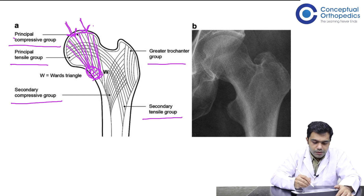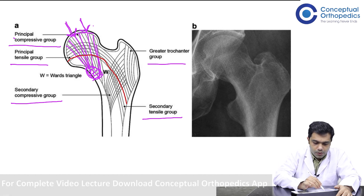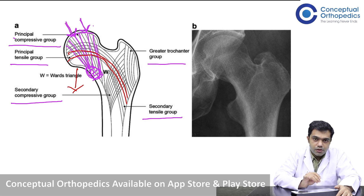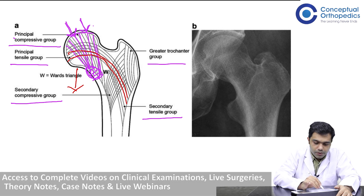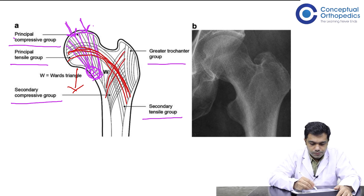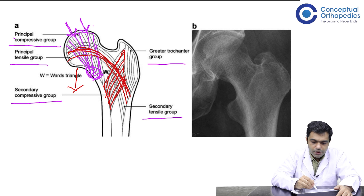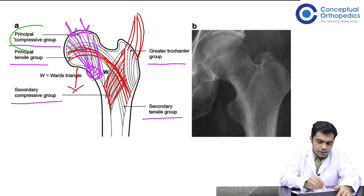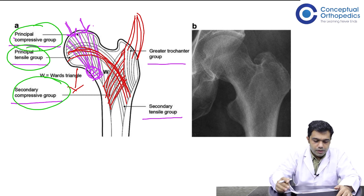The next strongest is the principal tensile group, which represents resistance to the bending force at the neck of the femur. This bending force causes trabecular formation as the tensile group, and it is the second most strongest. The third is the secondary compressive group, which has less loading. Then we have the greater trochanteric group, formed due to the pull of the glutei. The three most important groups to remember are the principal compressive group, the principal tensile group, and the secondary compressive group.